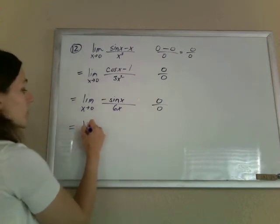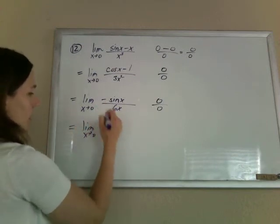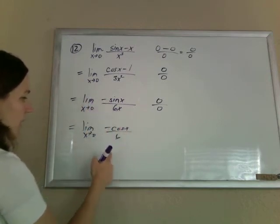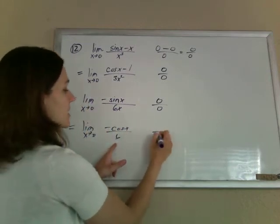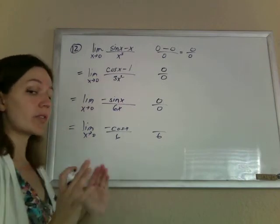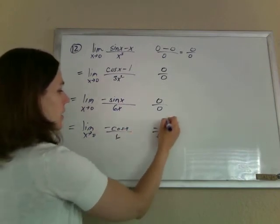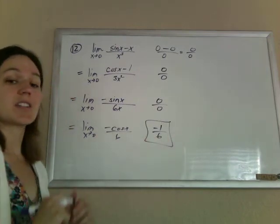All right, fine, one more time. This is going to be negative cosine of x over 6 when we take the derivatives again. Now, finally, we're getting a 6 on the bottom when we plug in 0. So no more 0 over 0 for us. Cosine of 0 is 1, so negative 1 over 6. That's our answer.